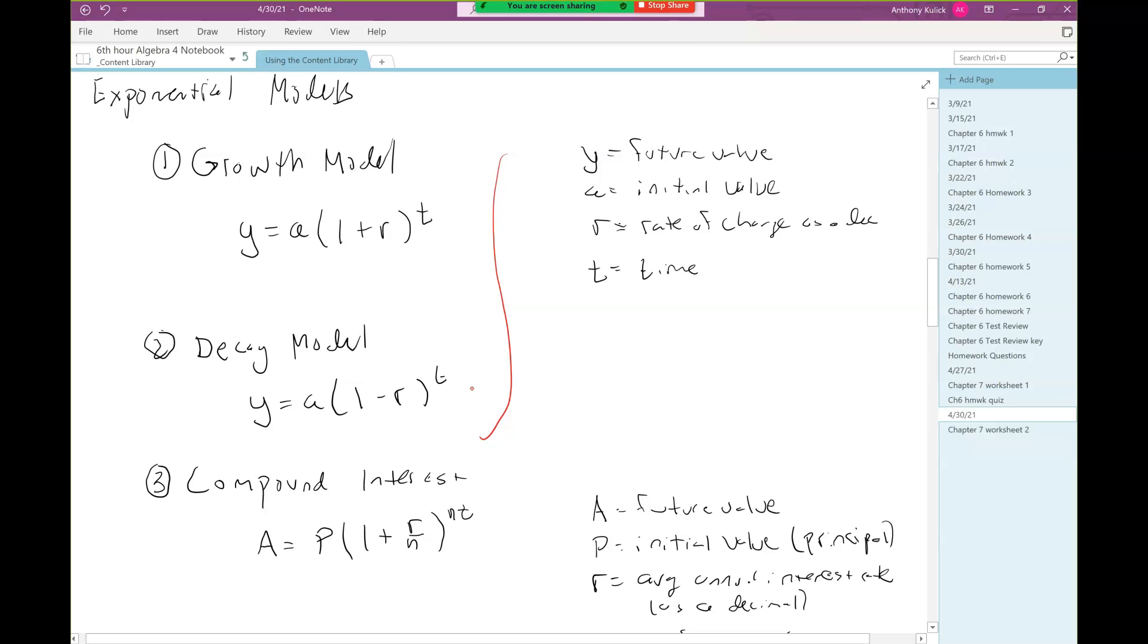In each of those situations, y is some future value, a is some initial value, r is the rate of change written as a decimal. So if it's a percentage, you have to convert that into a decimal by dividing by 100. And then t is time. The one thing you need to be careful about is making sure the time unit on the rate matches the time interval.